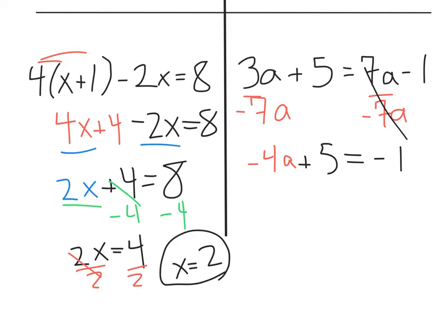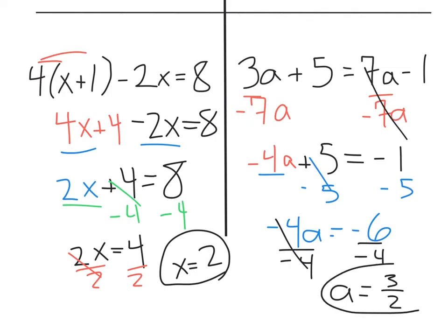Now I just take those steps, I want to solve for that a. I could subtract 5 from both sides. It's going to give me negative 4a equals negative 1 minus 5 is negative 6. I could divide both sides by that negative 4. Those are going to go away, and I'm going to have a equals negative divided by negative is a positive. I have 6 fourths. That can reduce to 3 halves, and that's my final answer.